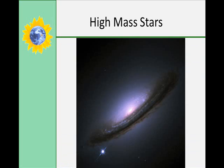High mass stars will explosively shed their outer atmospheres, becoming supernovas. The remaining core becomes a neutron star, which is smaller and denser than a white dwarf, and contains as much as three times the mass of our own sun. A spinning neutron star is called a pulsar, because it produces a pulsating radio source. The most massive stars, which are 40 times the mass of the sun, explode and form a supernova, and all that remains in its interior is the star's gravity, so it becomes a black hole.